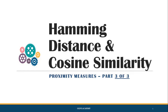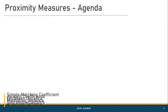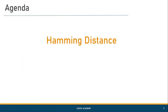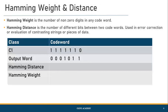Welcome to the world of data science. In this video we are going to discuss two more proximity measures: hamming distance and cosine similarity. Hamming weight is the number of non-zero digits in a given codeword, and hamming distance is the number of different bits between any two given codewords.